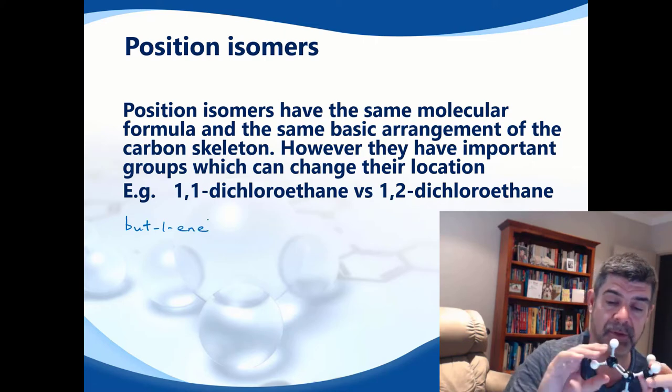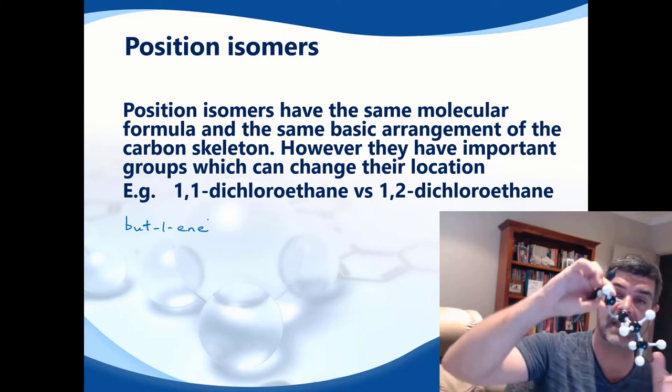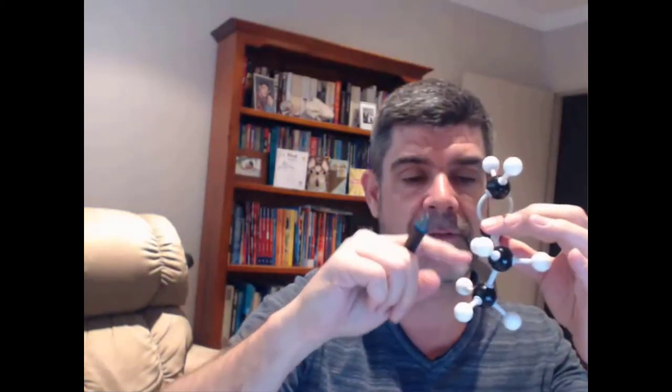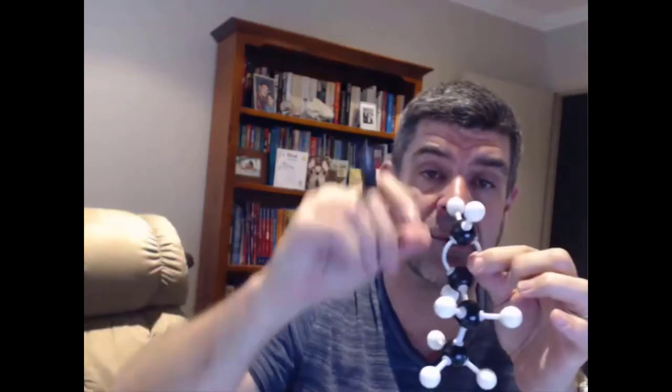So this would be but-1-ene. It's off an end carbon, and so while I could go 1, 2, 3, 4 or 1, 2, 3, 4 — if I start from here, it's number 1. That's already the smallest number, so that's the easiest way for me to name that.